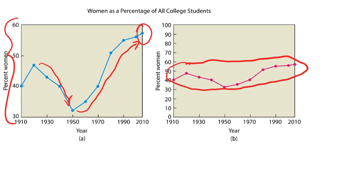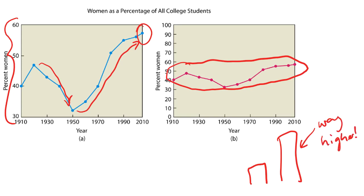So be careful: sometimes it is useful to zoom in and show data with a bigger apparent change. But the media can use this to their advantage — if you see a bar graph where one bar looks way higher, your mind automatically assumes it's much larger without checking the actual values. The difference could be between 100 and 300, or between 299 and 300. Make sure you pay attention to the scale so you don't get tricked.